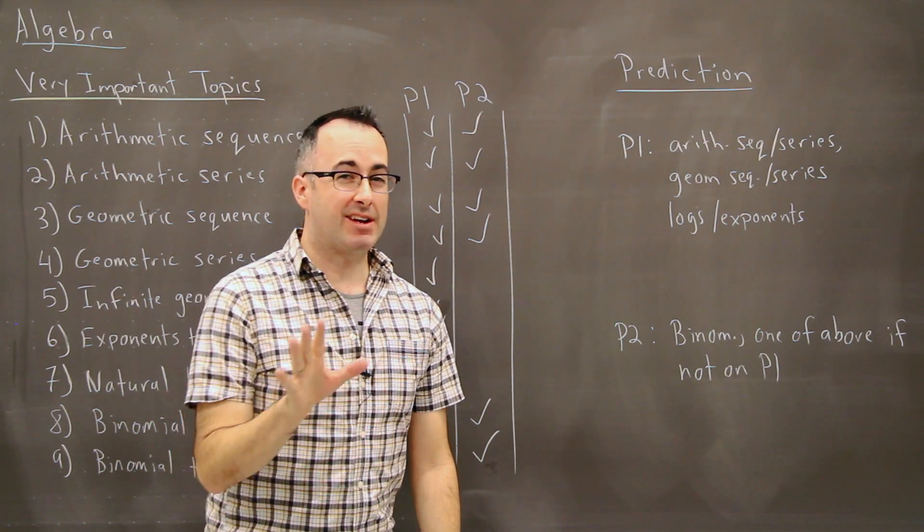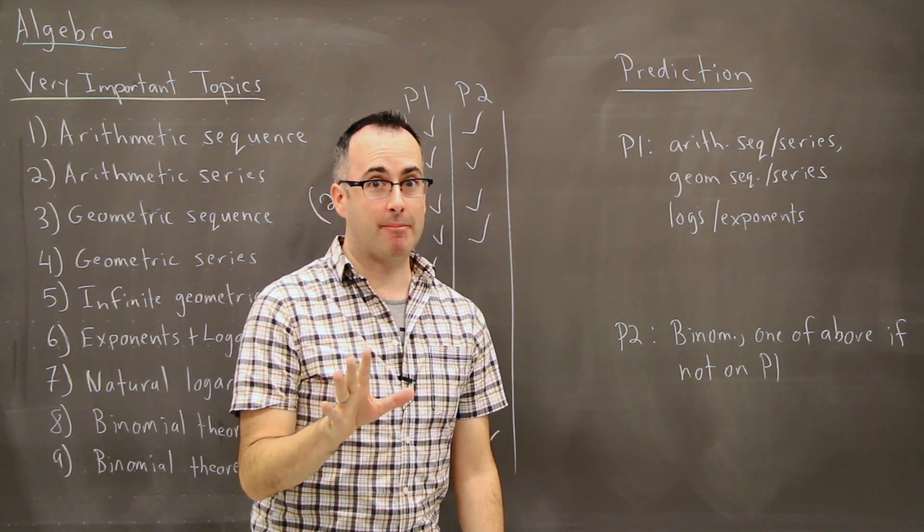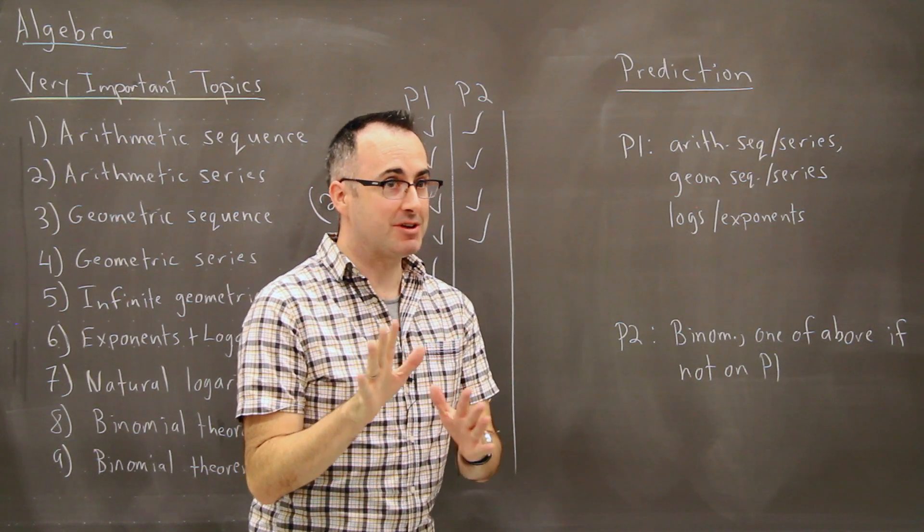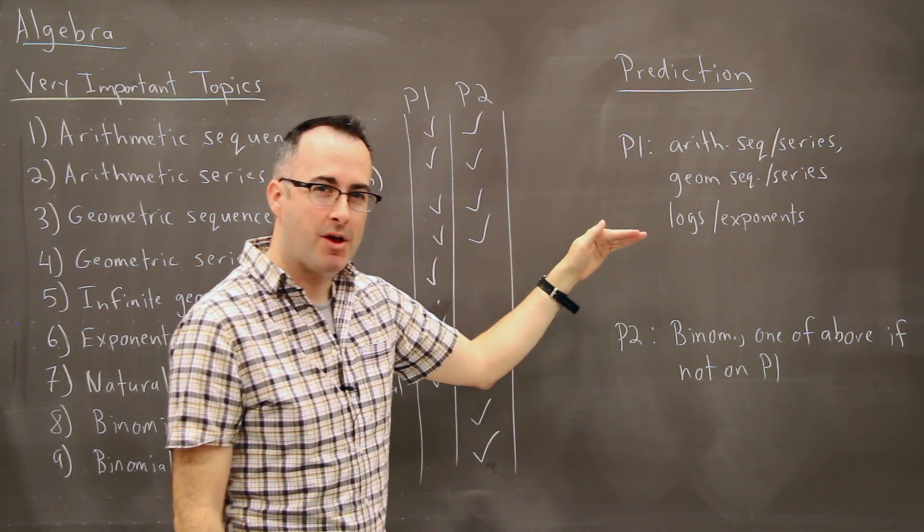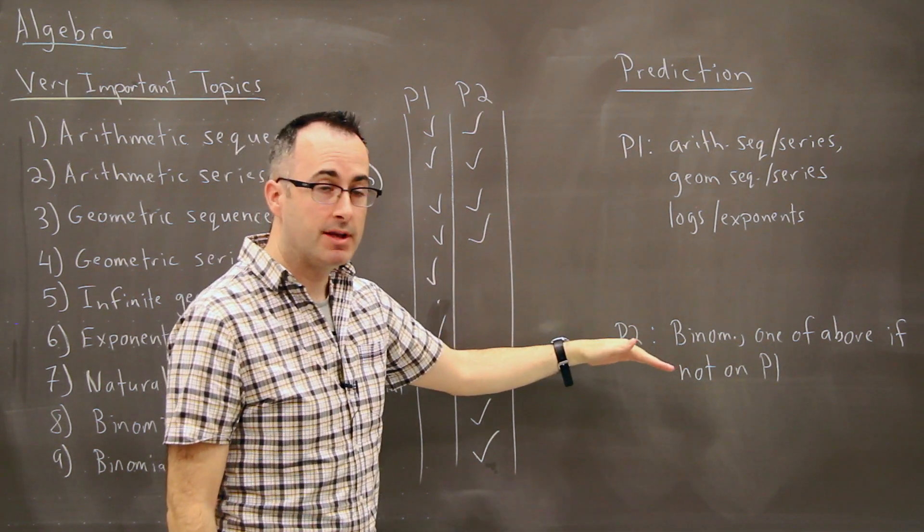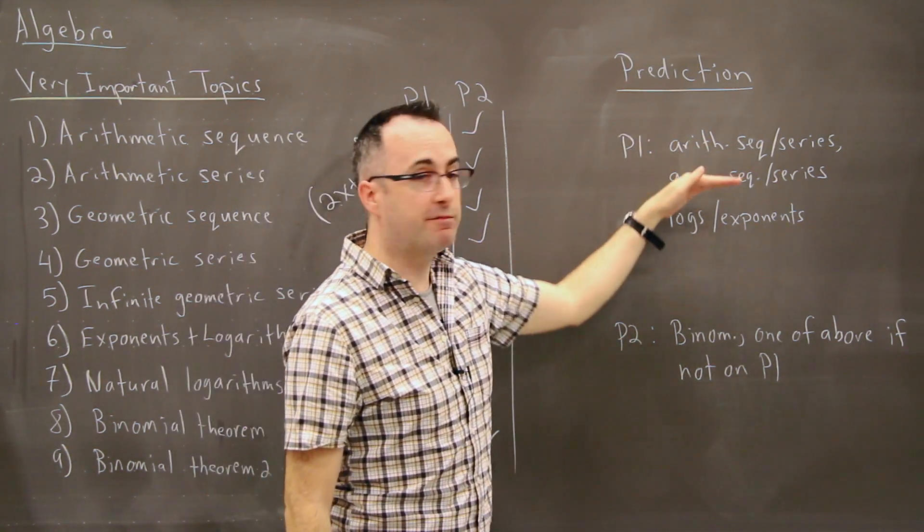So if you want to try to predict what's going to show up on an exam, this is maybe a little bit dangerous, but here's what I've decided to do, is try to say what's most likely going to show up on a Paper 1 and a Paper 2. And these are in order of probability.